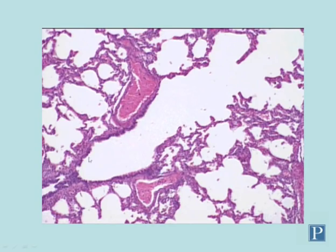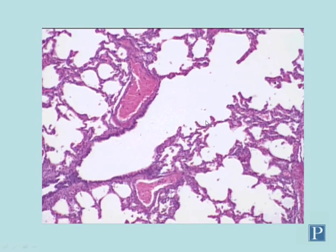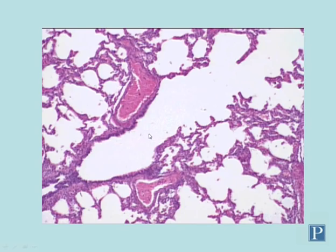Here we can see a terminal bronchiole transitioning into a respiratory bronchiole. You can tell this is a respiratory bronchiole because you can see walls of alveoli. Some alveoli, depending on how they're sectioned, show complete intact walls, but because they're very thin and three-dimensional, in many sections you only see parts of the walls. Here are three alveoli attached to this bronchiole, so this is a respiratory bronchiole. This is the terminal end of the conducting portion — classified as a terminal bronchiole because there are no alveoli in its wall.